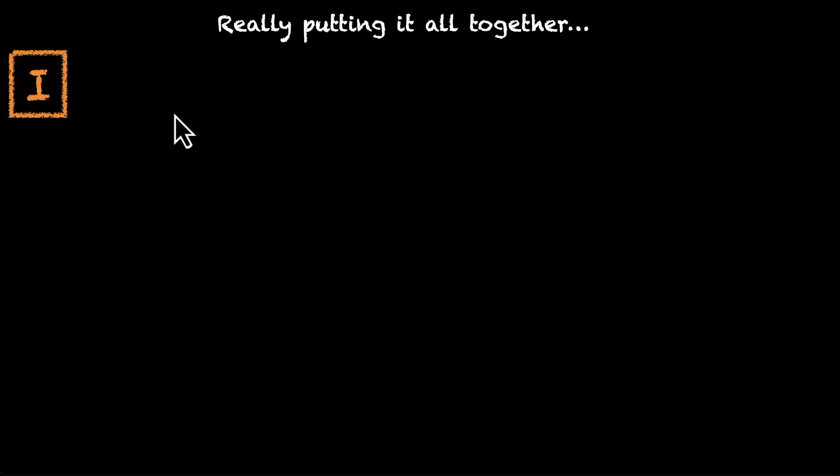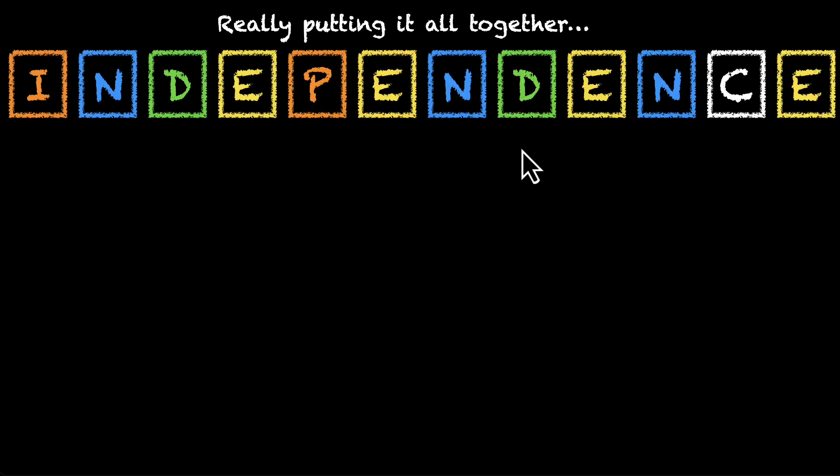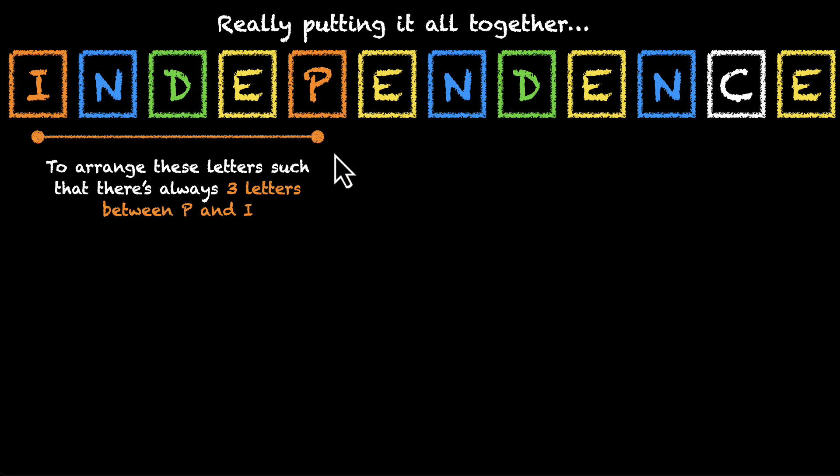Now let's really put it all together. We have these letters from the word independence, and our job here is to figure out the number of ways in which we can arrange these letters such that there's always 3 letters between P and I. It's a very complex task, it's a very complex job. And remember from the first video, fundamental principles of counting, whenever you have a complex job, it's always a good strategy to break it down into simpler tasks. So let's do that here as well.